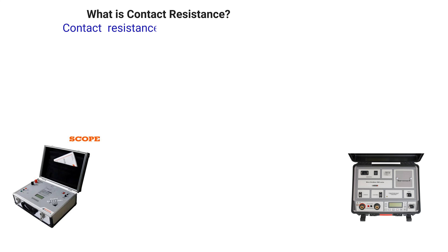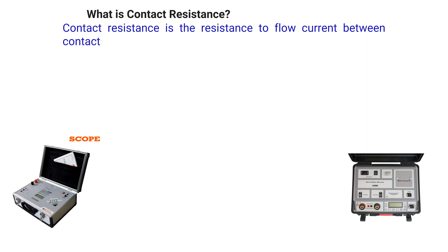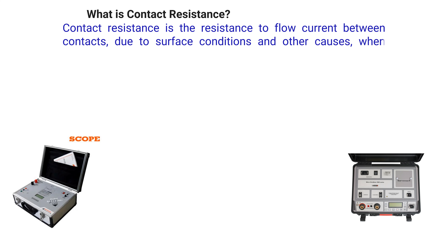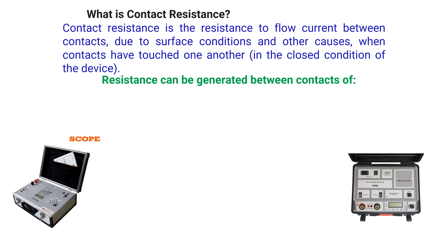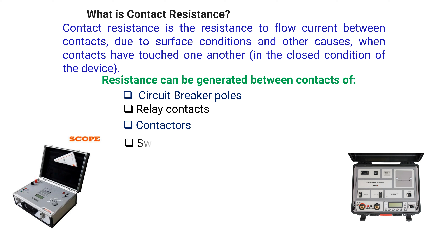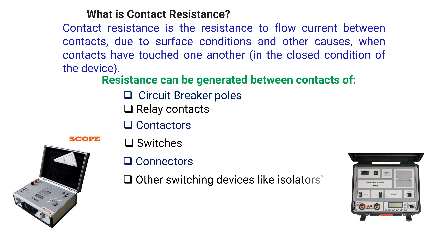What is contact resistance? Contact resistance is the resistance to flow of current between contacts due to surface conditions and other causes, when contacts have touched one another in the closed condition of the device.